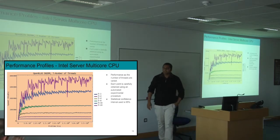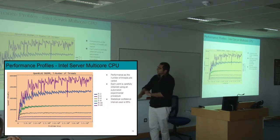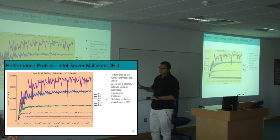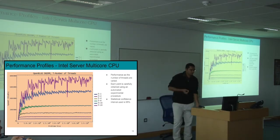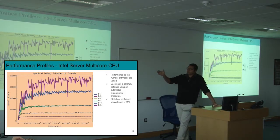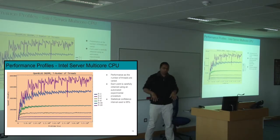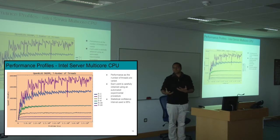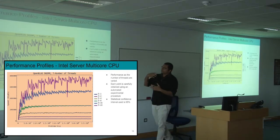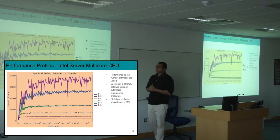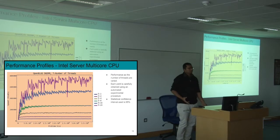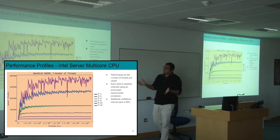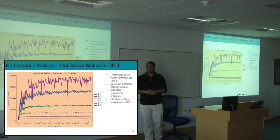An audience member asks about the significance of what happened at problem size 2.5 — is it an anomaly? The speaker confirms it's not an anomaly; it's reproducible. It's very hard to find out where these variations are coming from unless you're an expert in this application. As a group working at a high level, they work with highly optimized applications like OpenBLAS and would need to go back to OpenBLAS developers to investigate. The chips are so complex with too many factors; the last-level cache is probably the culprit since it's a multi-threaded application with lots of threads being very unproductive.